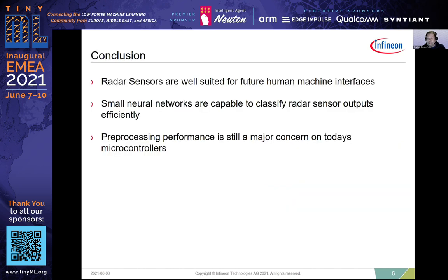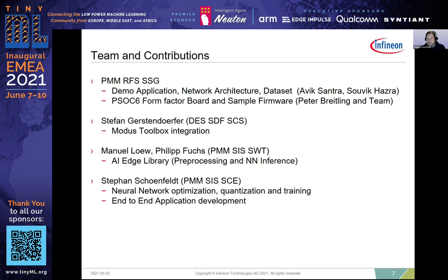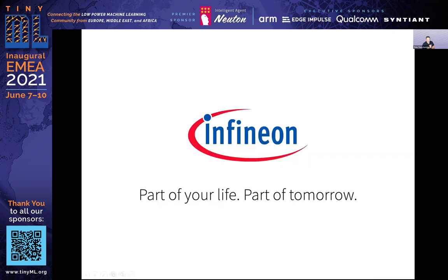To summarize the key takeaways: radar sensors are well suited for human-machine interfaces; small neural networks are capable of classifying radar sensor outputs efficiently; and pre-processing performance is still a major concern on today's microcontrollers. Thanks to all colleagues who contributed to the project. Now open for questions and answers.